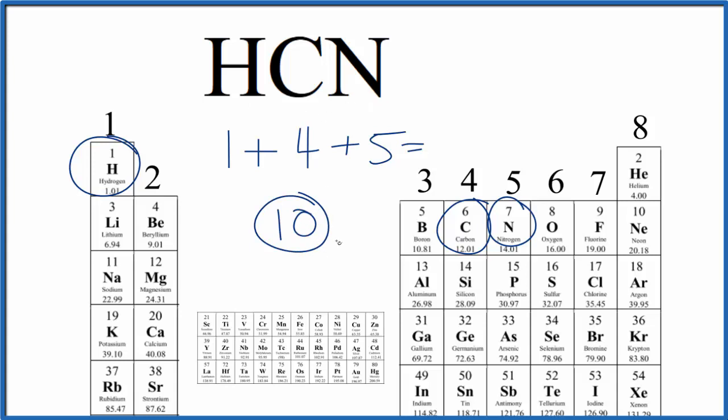If we wanted to draw the Lewis structure, we'd distribute these 10 valence electrons around so that we completed the octets on the carbon and the nitrogen, and we would have two around the hydrogen. If you need help writing the Lewis structure for HCN, there's a link in the description for how to do that.